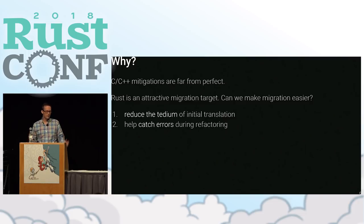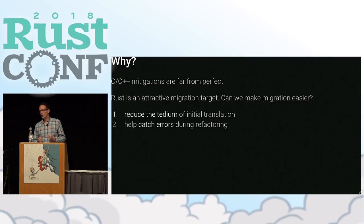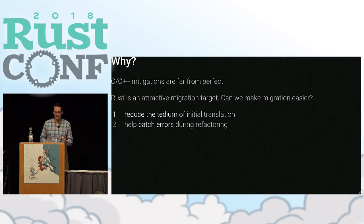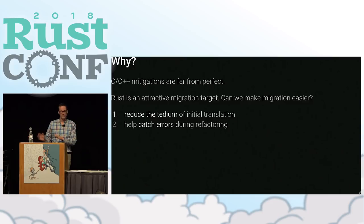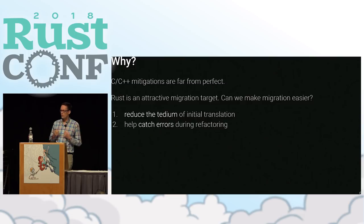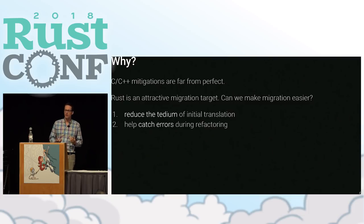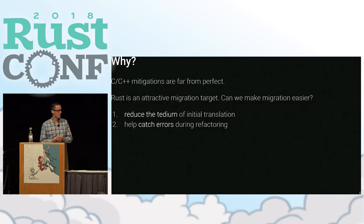Rust is great, but it's obviously not easy to get into Rust. Is there anything we can do to lower the barrier to entry if you have a C code base that you depend on and must use? We're going to be talking about two things: the first is reducing the tedium of getting into Rust syntax — I'm going to show you some really disturbing and ugly Rust code later — and that's something you'll want to refactor into pretty and idiomatic Rust. We're also going to do something to help catch errors during that refactoring process.